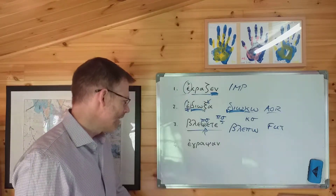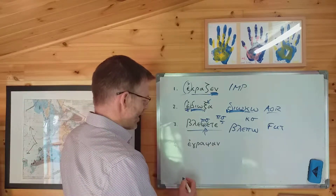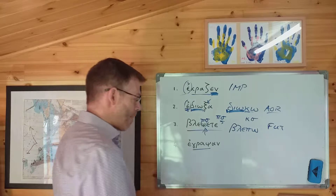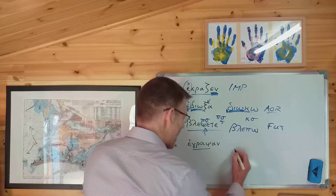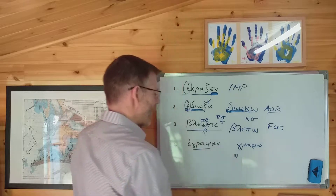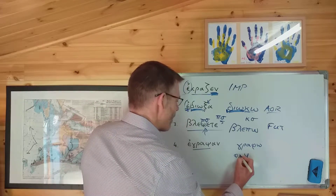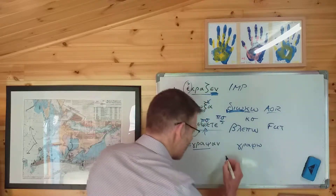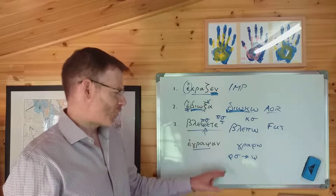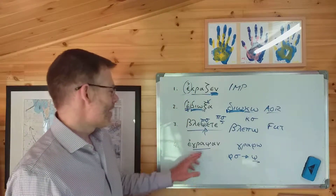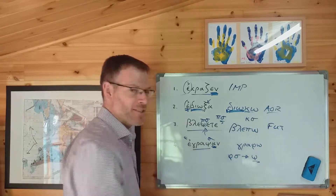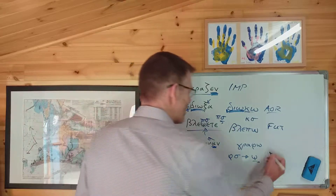One more example: agrapsan. How are we going to parse this? Find the stem. If you know your vocab, you'll know that the stem is graph, from the verb grapho, meaning I write. What's happened is the phi has turned into a psi with the addition of a sigma — phi plus sigma becomes psi, because if you try and say it, it starts to sound like ps. So agrapsan has a sigma suffix buried in there, and it's also got an epsilon augment. No surprise then, it's got the aorist ending: aorists like alphas, and therefore this is an aorist.